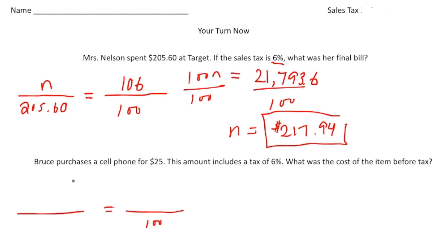All right, let's look at the second one. It says Bruce purchases a cell phone for $25. This amount includes a tax of 6%. All right, what was the cost of the item before the tax?